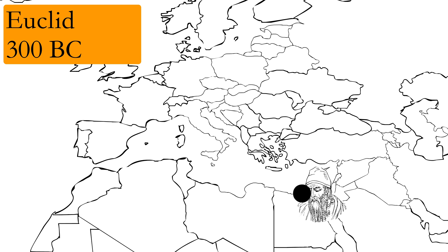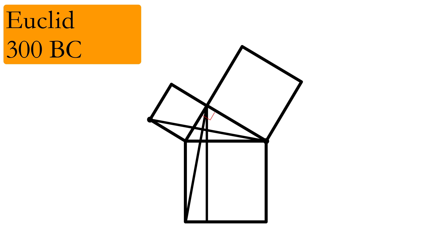Around 300 BC, Euclid wrote the greatest geometry textbook of all time where in the first book he completely proved the Pythagorean theorem. This set a new standard in mathematics where math ideas needed to be proven so that it stood the test of time.